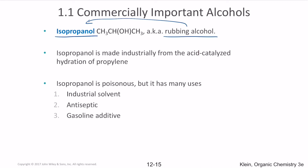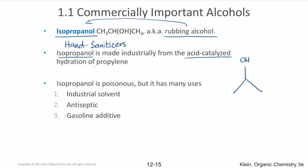Isopropanol (2-propanol), or rubbing alcohol, is used in hand sanitizers and as an industrial solvent, antiseptic, and gasoline additive. It is produced by acid-catalyzed hydration of propylene. It is poisonous and used industrially, and as a gasoline additive it helps protect engine walls from corrosion.